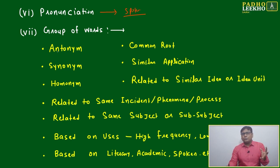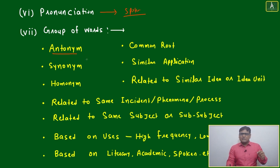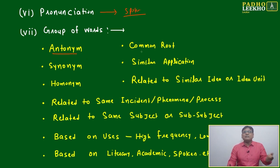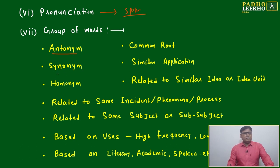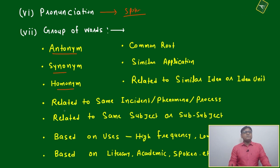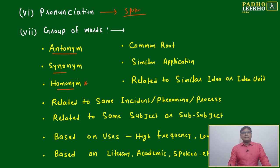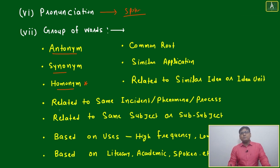One type is antonym — if words are showing the same type of meaning. Then antonym, common root, synonym — let's come in a vertical way: antonym, synonym, homonym. Homonym is important for your competitive exams. Antonym and synonym directly will not be as helpful, but homonym many times will be helpful.